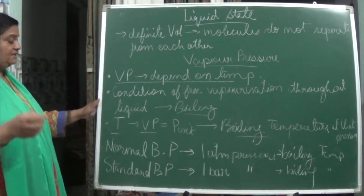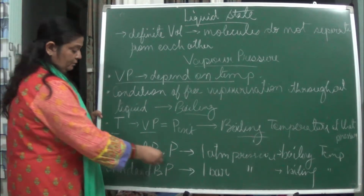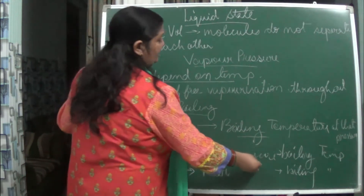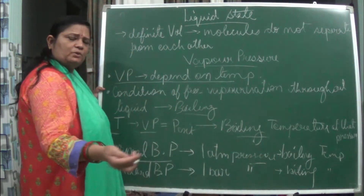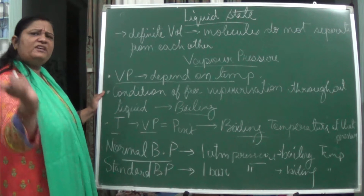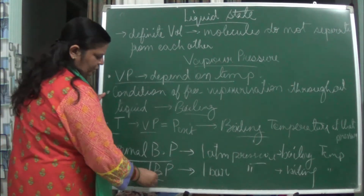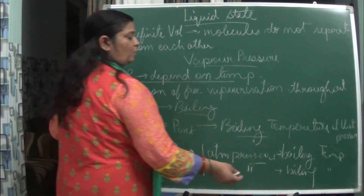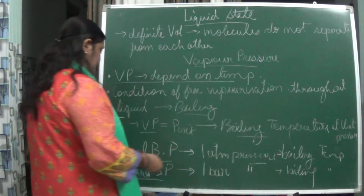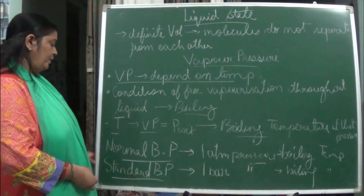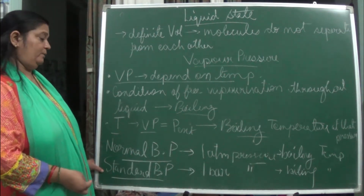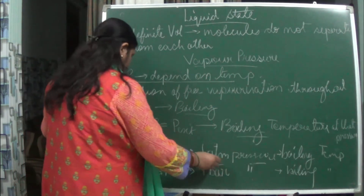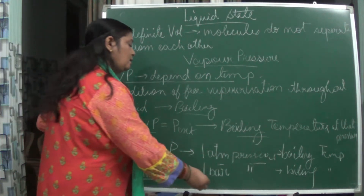When we say normal boiling point it is at one atmospheric pressure, and that is known as boiling temperature. When we say standard boiling point it is at one bar pressure, and that is also the boiling temperature. It depends on whether you are taking normal boiling point at one atmospheric pressure or standard boiling point at one bar pressure.